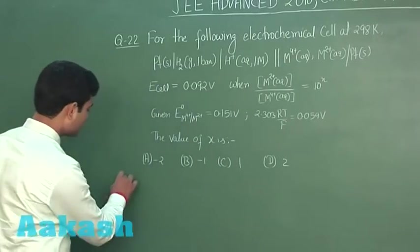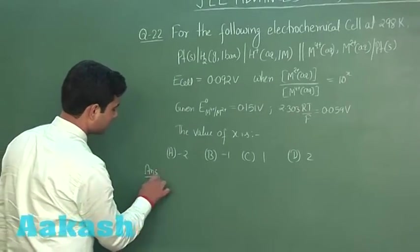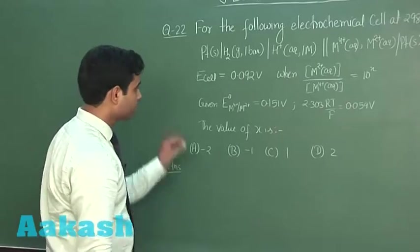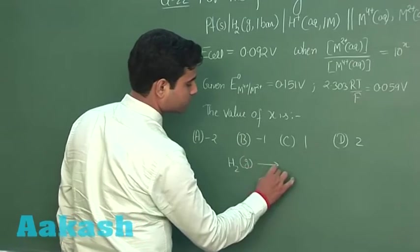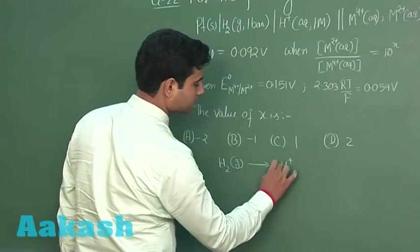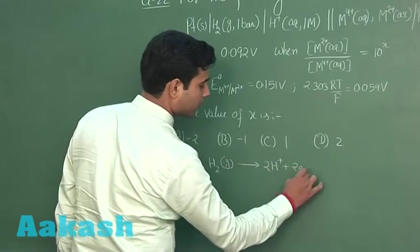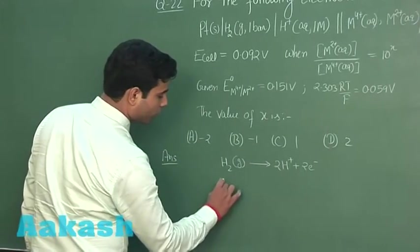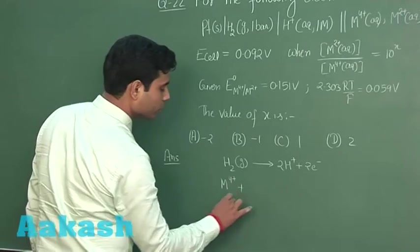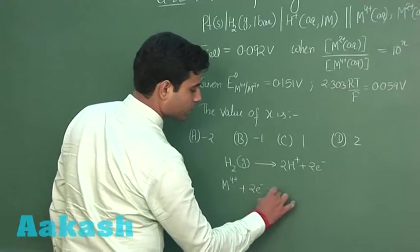How can we solve this question? First of all, let us write the reaction. At anode, hydrogen will oxidize - 2 H plus plus 2 electron. And at cathode, M 4 plus will reduce to M 2 plus.